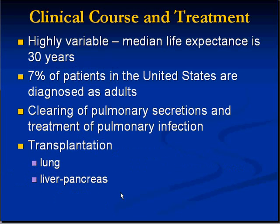The median life expectancy of cystic fibrosis is only 30 years; more than half of patients die in their teens or 20s. Many aren't even diagnosed until adulthood — these would be the least severe cases. The general concept of management is to keep pulmonary secretions clear and not let the mucus build up. Lung transplant is probably one of the most common reasons a younger person undergoes transplantation, and liver and pancreas transplants are also performed.